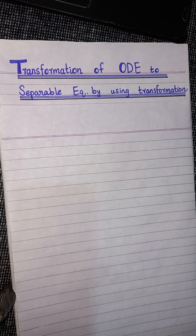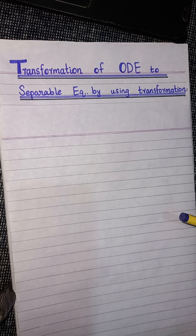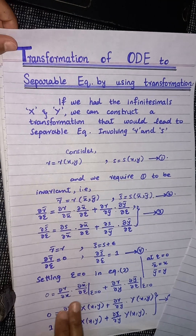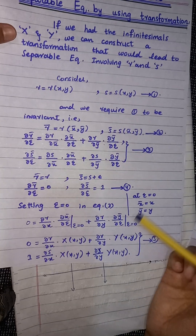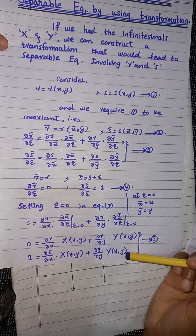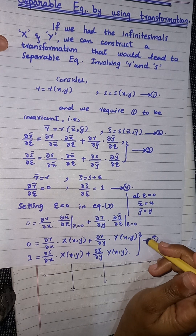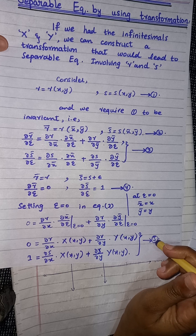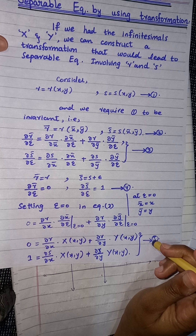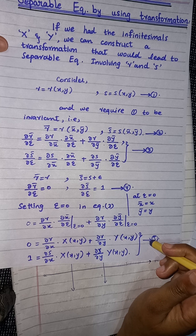In the previous lecture, I discussed the transformation of ordinary differential equations to separable equations using transformation. In that lecture, we found two transformation equations where we only need the values of infinitesimals, and then we can convert our given ODE to find the change of variables. These two transformation equations are given in equation number five. Now I will show how we can find the canonical variables.